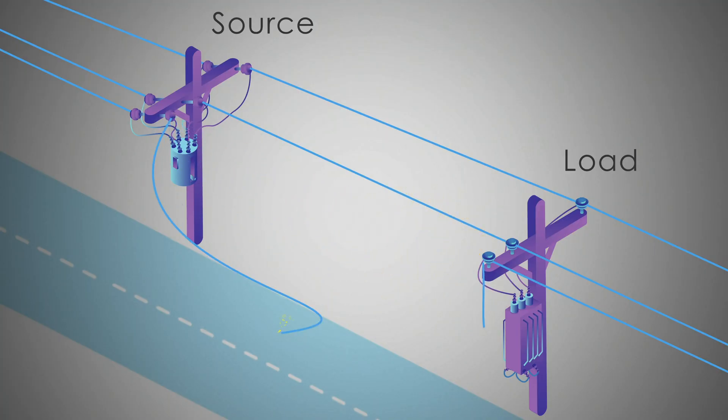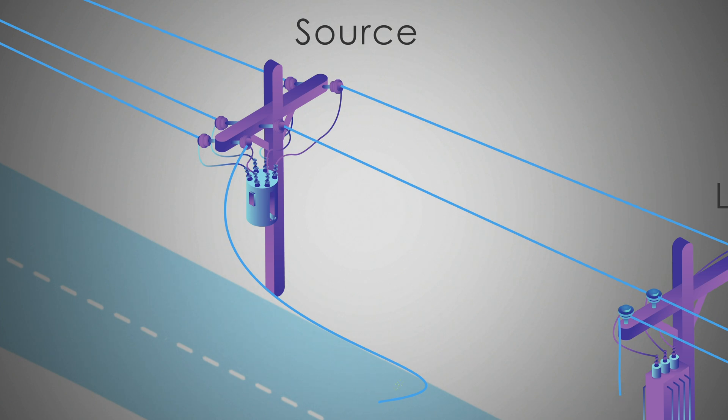When a conductor breaks and falls to the ground on the source side, the protection generally sees this and isolates the fault.